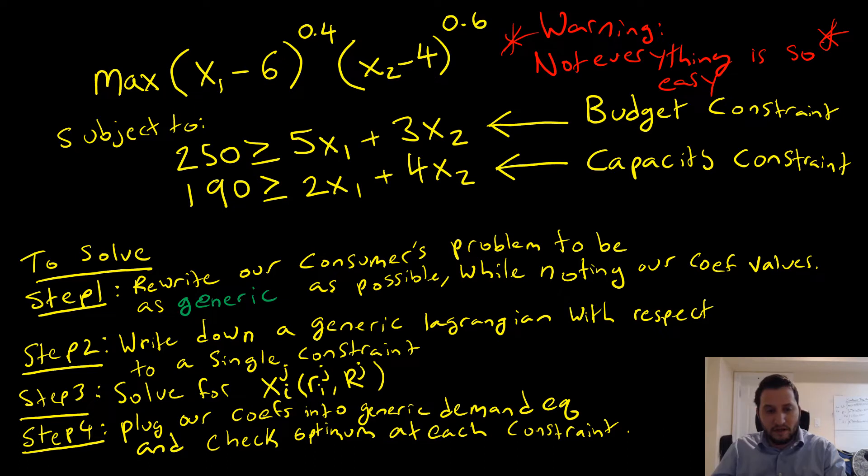In order to solve this, we have to rewrite our consumers problem to be as generic as possible, while noting our coefficient values like last time. Next is that we're going to write down a generic Lagrangian with respect to a single constraint. Next is that we're going to solve for our perspective demand equations with cost coefficients from constraint J and objective capital R J. And then we're going to plug our coefficients into the generic demand equations and check the optimums at each constraint.